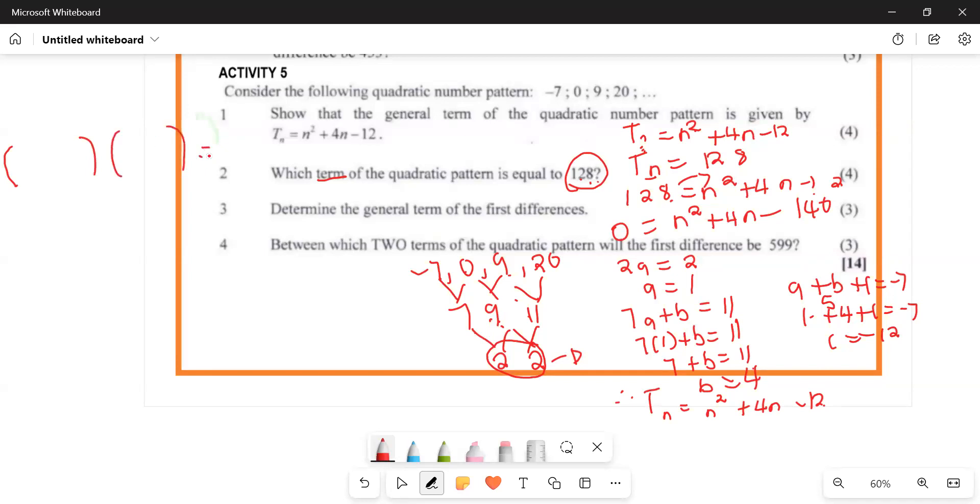Now we factor: 2n² + 4n - 140 = 0. Dividing by 2: n² + 2n - 70 = 0. We need two numbers that multiply to -70 and add to 2. Breaking it down, we factor as (n + 14)(n - 10) = 0. Wait, let me recalculate. Actually n² + 14n - 10n - 140... factoring gives n(n + 14) - 10(n + 14). So we get n = -14 or n = 10.